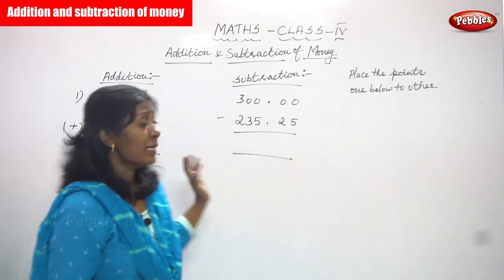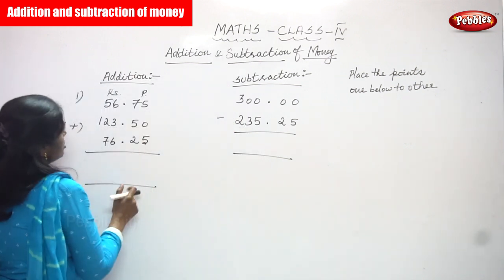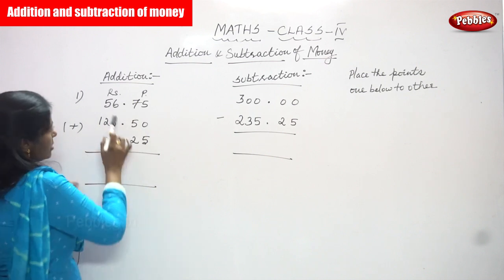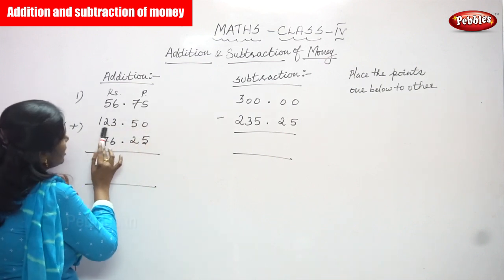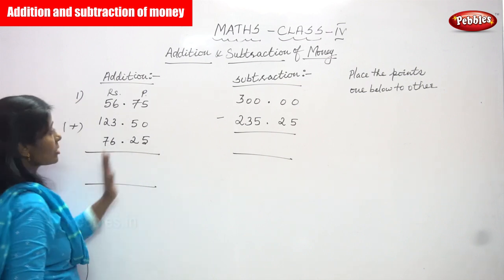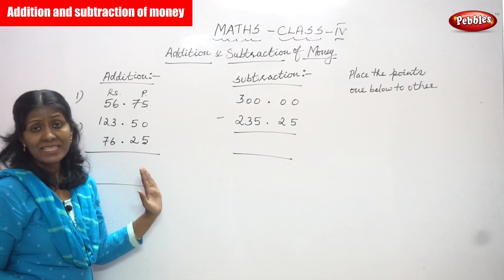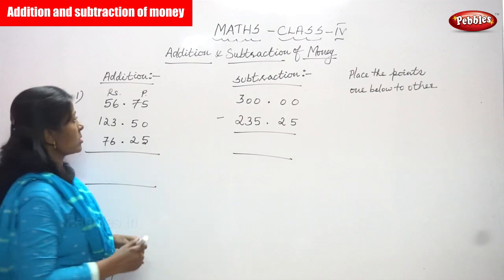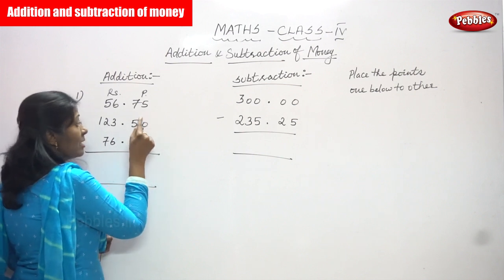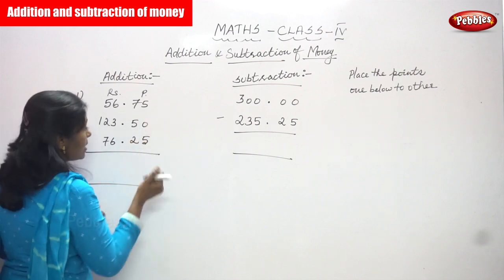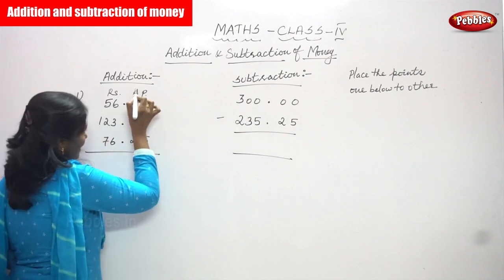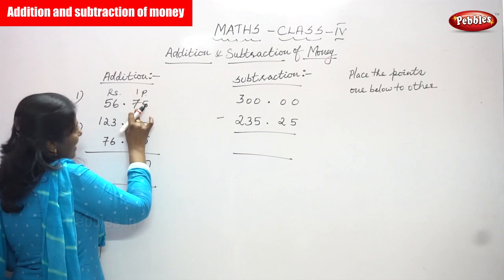Now let's start the class — addition of rupees and paise. The first number is 56 rupees 75 paise, the second is 123 rupees 50 paise, and the third is 76 rupees 25 paise. First, you have to calculate only the paise, then go to the rupees. 5 plus 0 is 5, then 5 plus 5 is 10, so you put 0 and carry over 1 to the next place.